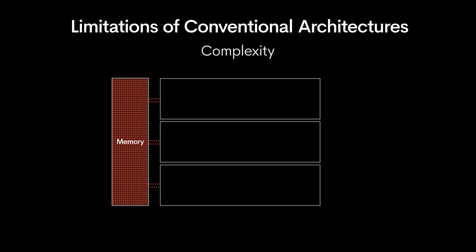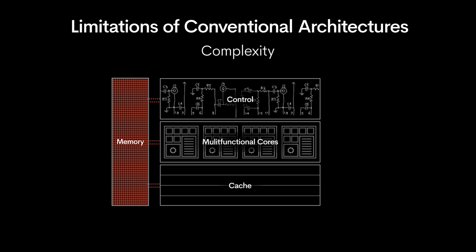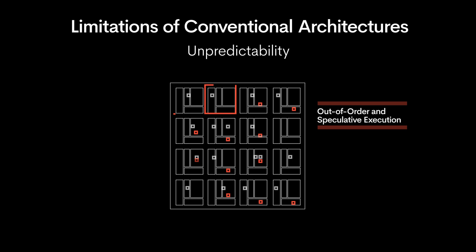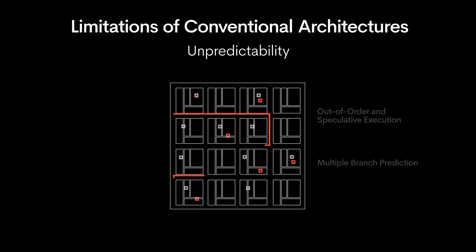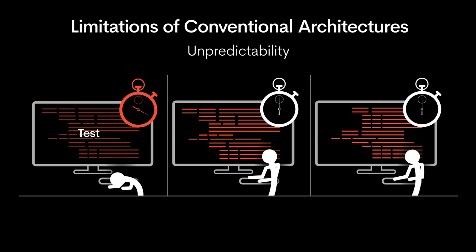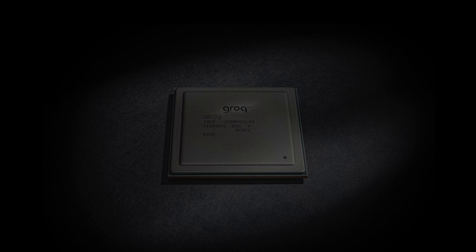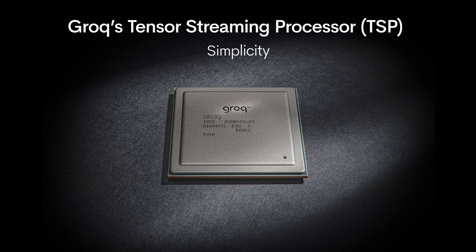In conventional architectures, performance comes with complexity in the form of complicated control circuitry, multi-functional cores, and multi-level caches. There's a lot of silicon — sometimes more than 60 percent — that is not used for compute. Unpredictability is the unavoidable consequence of out-of-order and speculative execution, multiple branch prediction, and multi-core, which only compounds this problem. Unpredictability forces developers to test and validate the system iteratively and plan around the worst-case performance and latency.